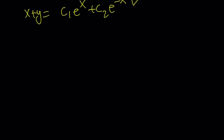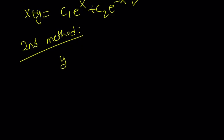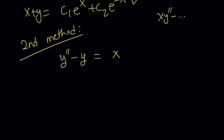Let's take a look at the second method. I'm going to put everything that has y in it on the left-hand side, written as a function of y with no x term on the left-hand side, so all the coefficients are constant. This is a non-homogeneous equation because we have an x on the right-hand side. Let's go ahead and solve the homogeneous equation first.